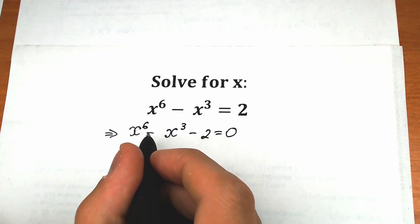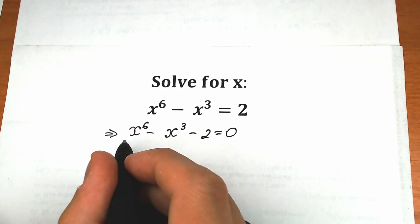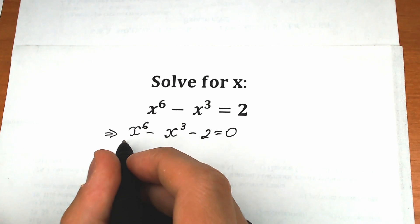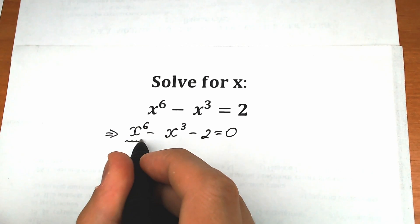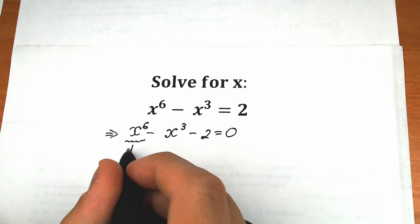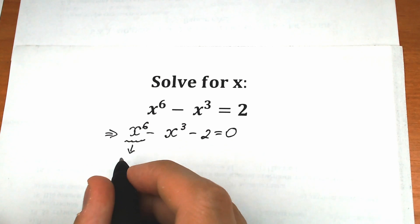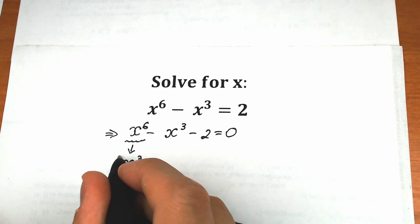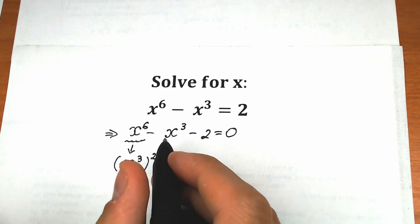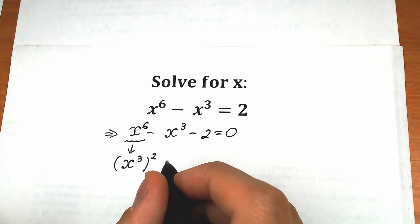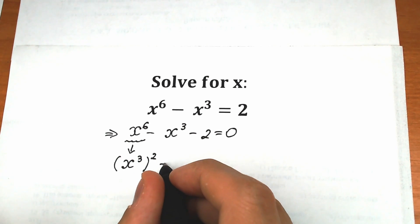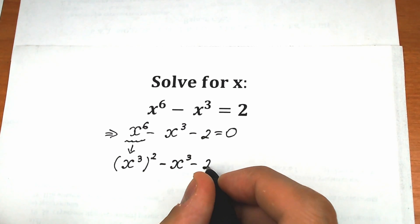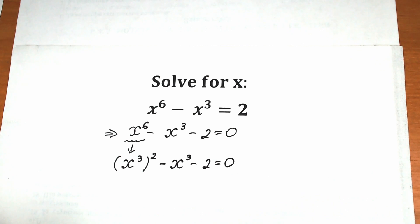Right now, what are we going to do? Let's write this x to the 6th power as x cubed squared. So instead of x to the 6th power, let's write x cubed to the second power. The rest of the expression stays the same: minus x cubed minus 2 equals 0.